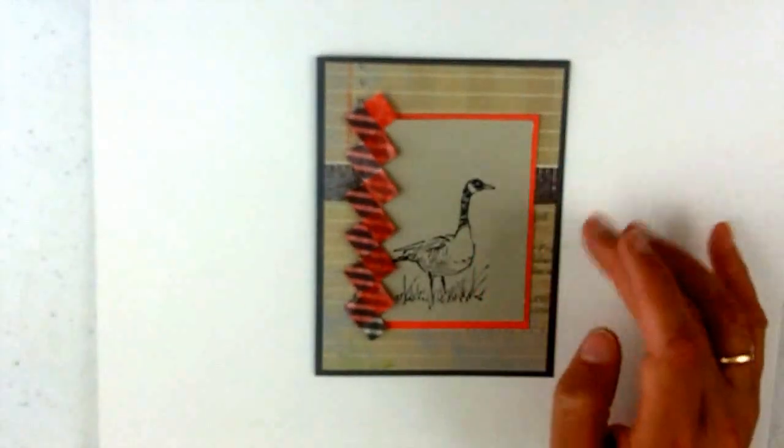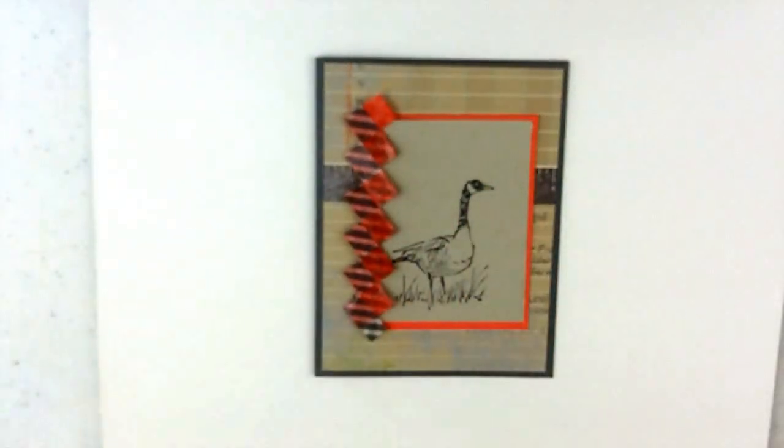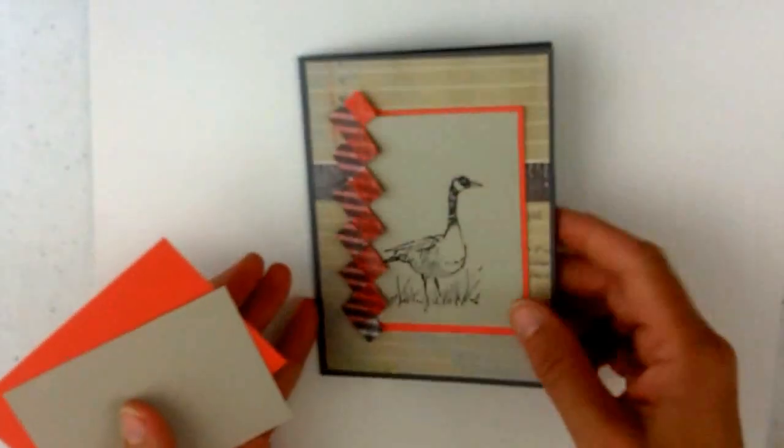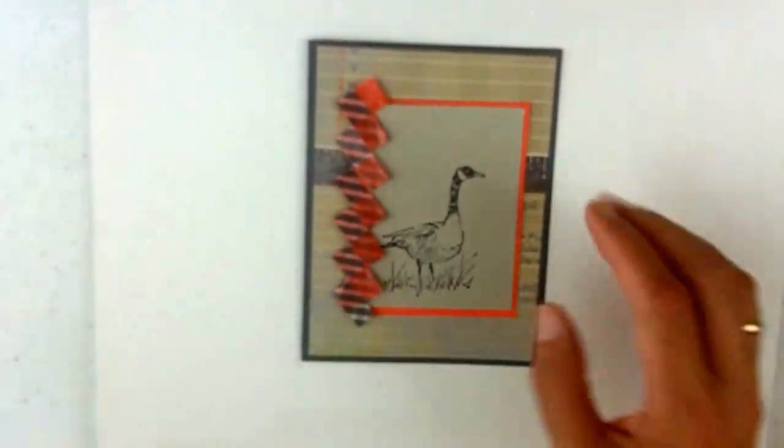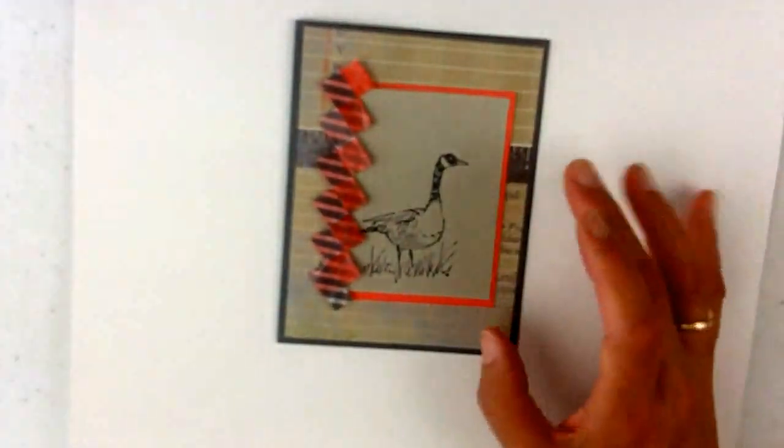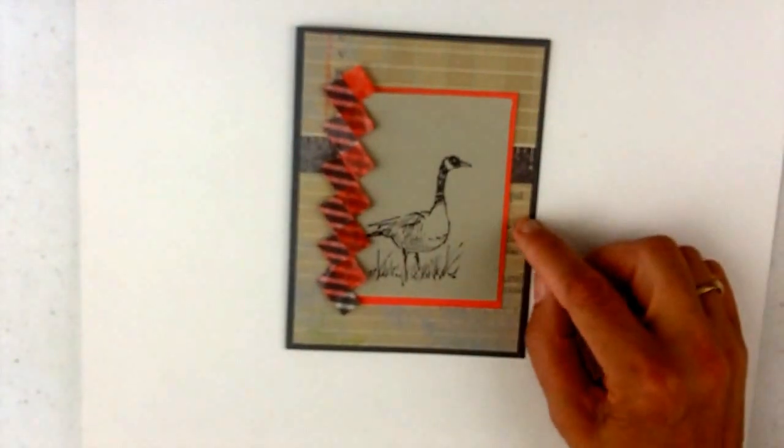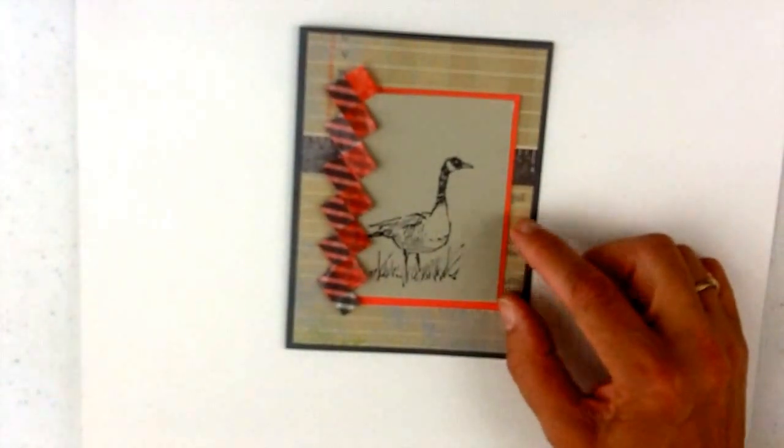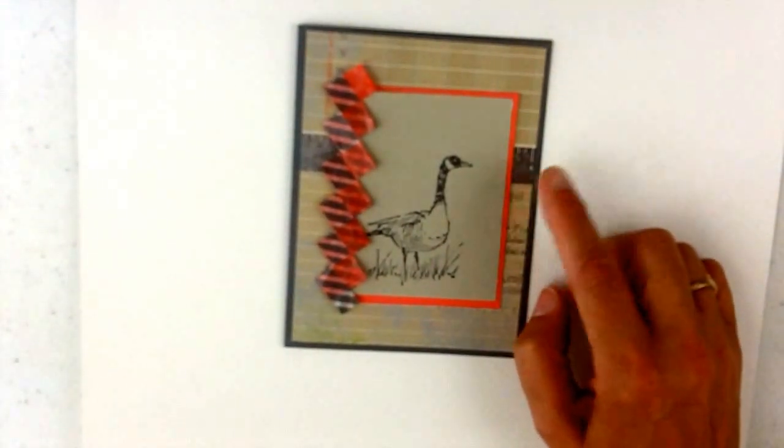So this is a very simple card, the actual layout. I just have a basic base that's five and a half by eight and a half folded, and then I have a piece of paper from the This and That designer series paper cut five and a quarter by four.